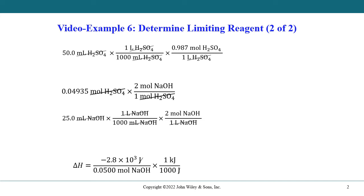So the first step would be here, step one, where we've got 50 mL of sulfuric acid. We're converting this to liters. And then here is the concentration of the acid, 0.987 mole per liter. And we find that we get this number of moles of sulfuric acid present.